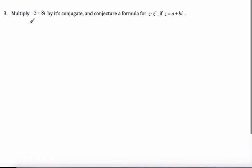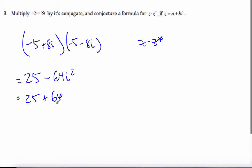Okay. And now multiply negative five plus eight i by its conjugate, negative five minus eight i. And when I do that, I'm going to conjecture a formula for z dot z conjugate. So if I do this, I get 25. Because this is a difference of squares, the middle terms cancel out,